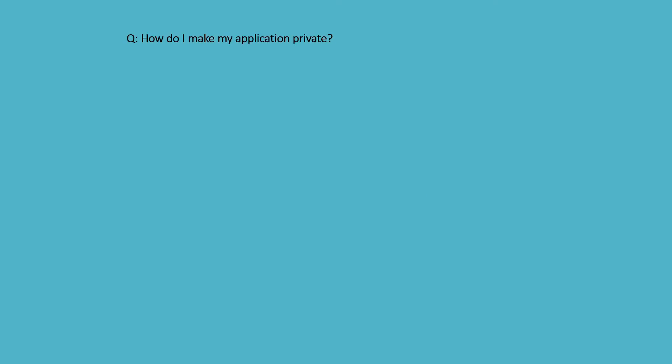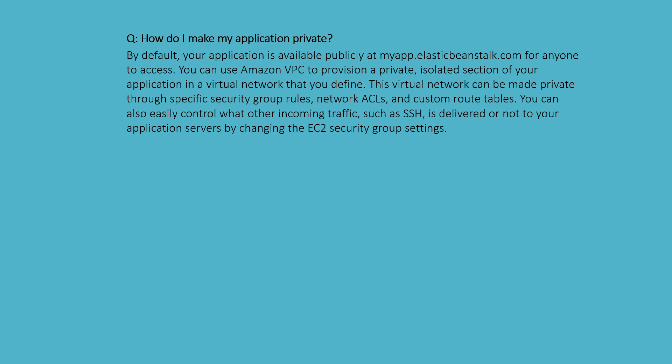How do I make my application private? By default, your application is available publicly at myapp.elasticbeanstalk.com for anyone to access. You can use Amazon VPC to provision a private, isolated section of your application in a virtual network that you define. The virtual network can be made private through security group rules, network ACLs, and custom routing tables. You can also control incoming traffic such as SSH by changing the EC2 security group settings.